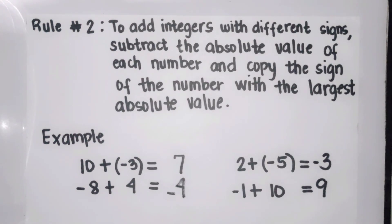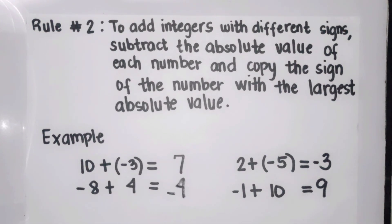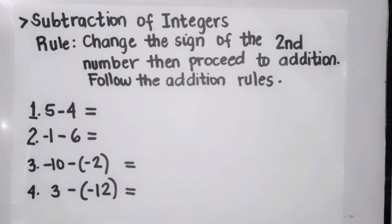To sum up the rules for addition: when two integers have the same signs, proceed to addition and copy the sign. When two integers have different signs, proceed to subtraction and copy the sign of the number that has the larger absolute value. Let's proceed to subtraction of integers. The rule is to change the sign of the second number, then proceed to addition following the addition rules. Example one: five minus four.